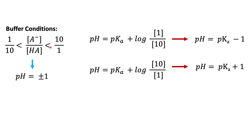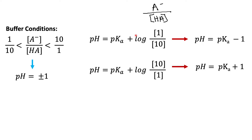If we take these ratios and plug them into the Henderson-Hasselbalch equation — where this part of the equation is A- over HA — and plug in our values, we get pH = pKa - 1 when the ratio is 1/10, and pH = pKa + 1 when the ratio is 10/1. That is simply the log of 1/10 and log of 10/1 respectively. We don't know the specific pH and pKa, so we get pH = pKa ± 1.